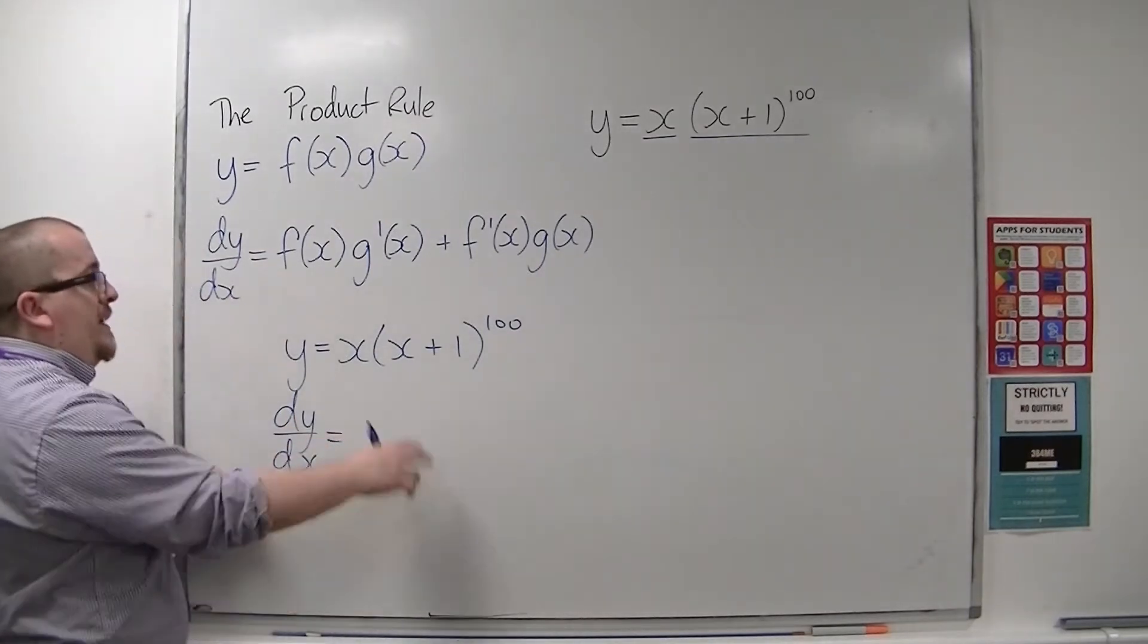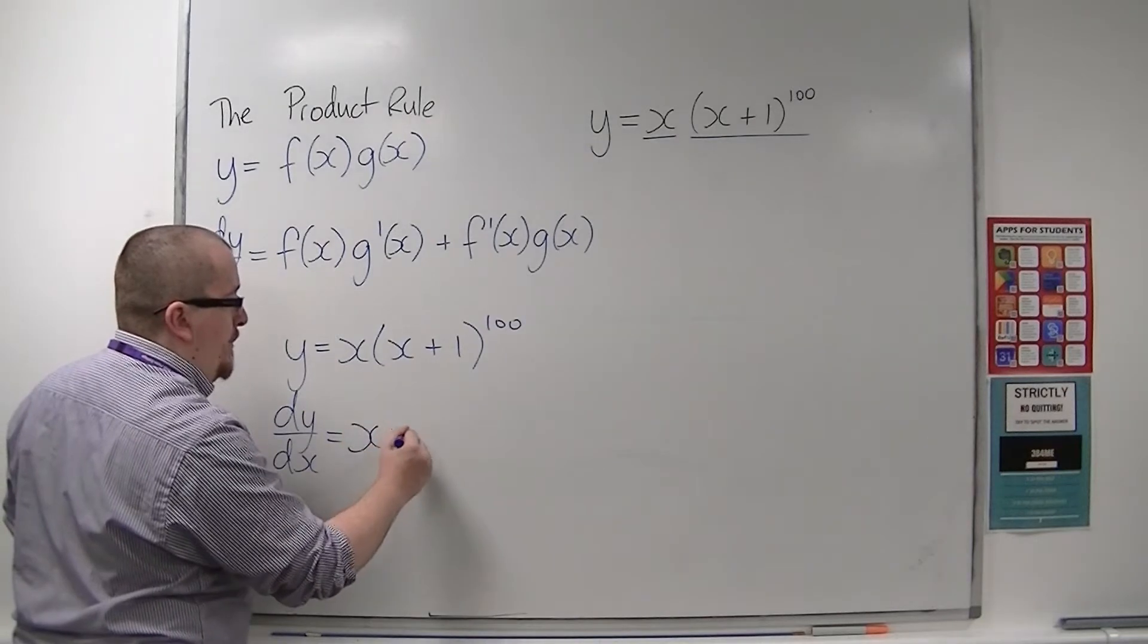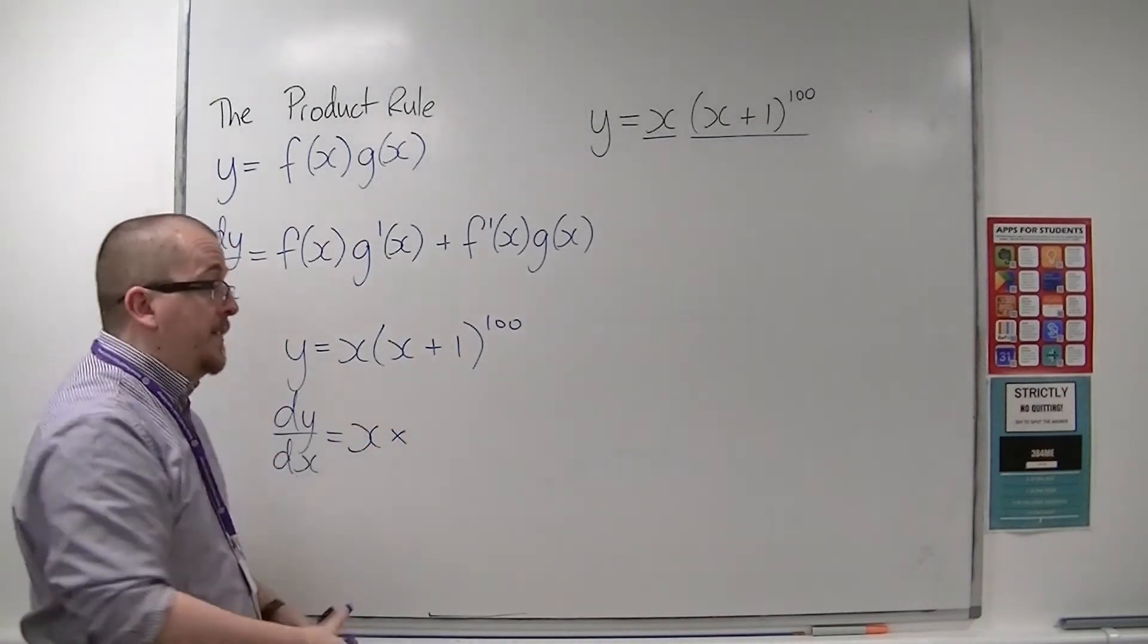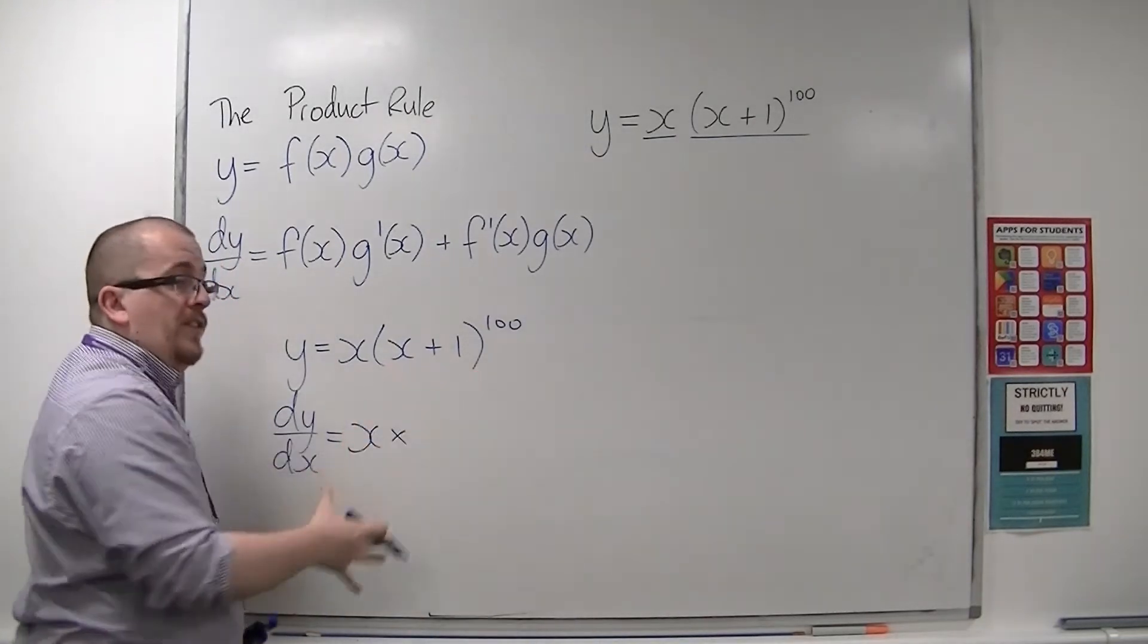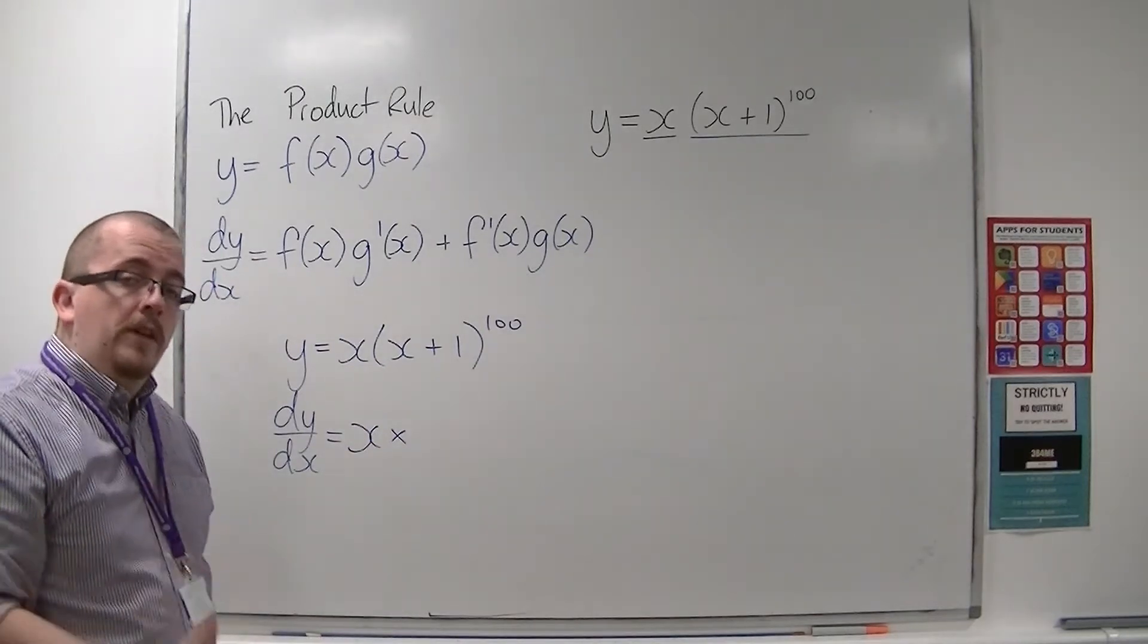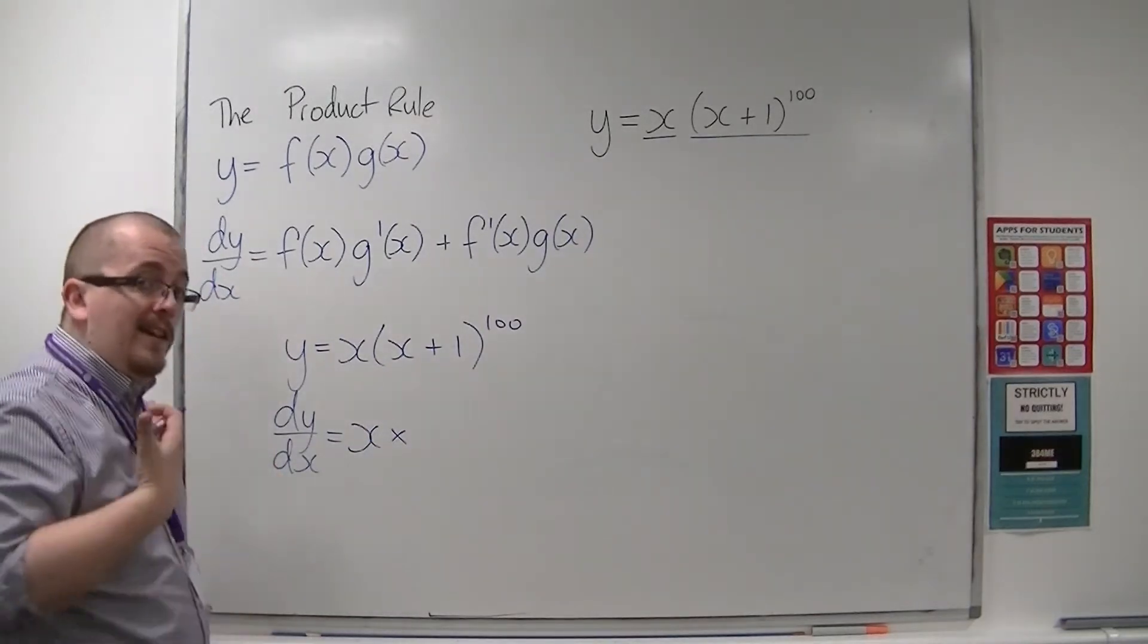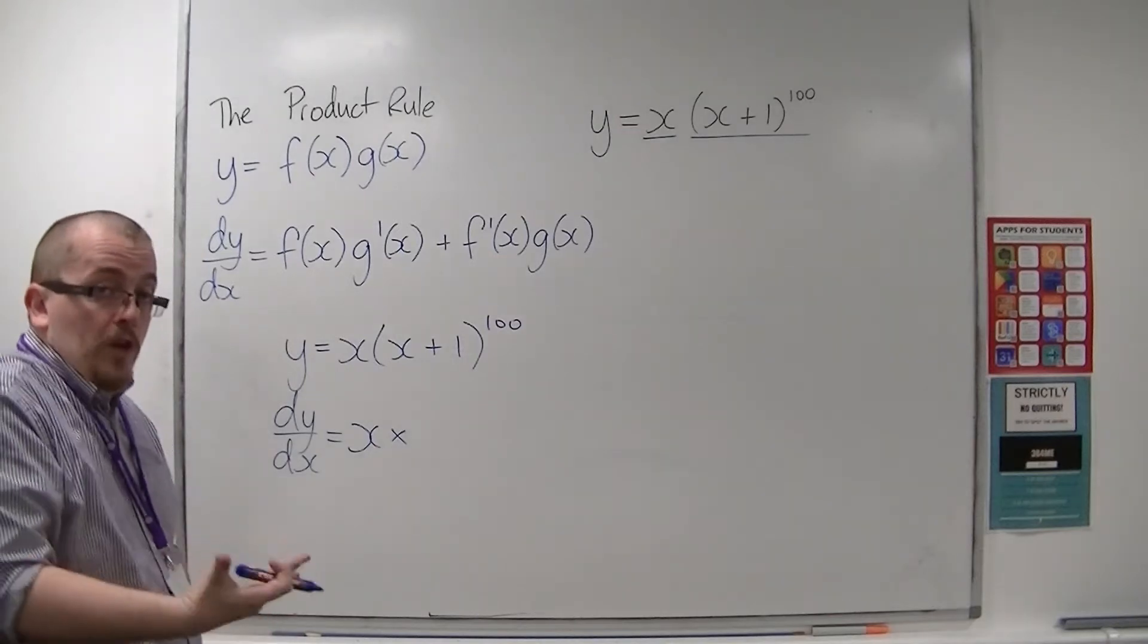So the first thing is to think the first, so x, times by the derivative of the second, the derivative of x plus 1 to the power of 100. Now that uses the chain rule. So product rule questions can include the chain rule as well.